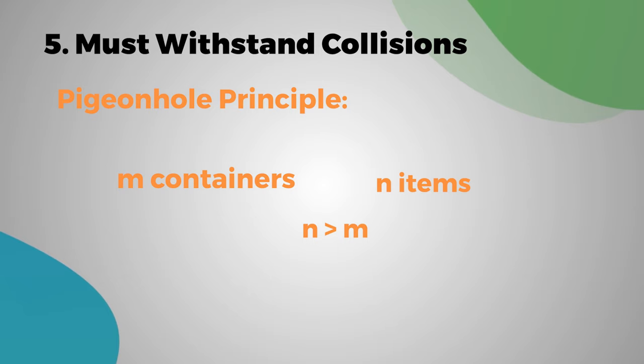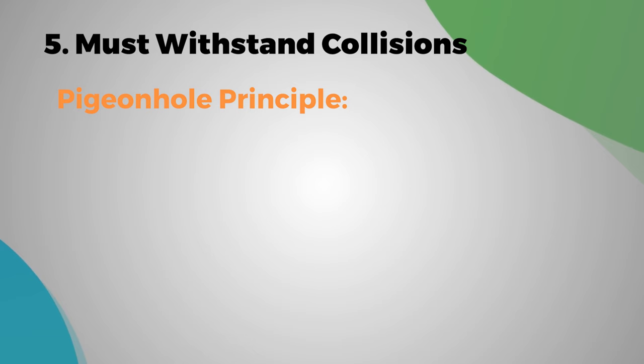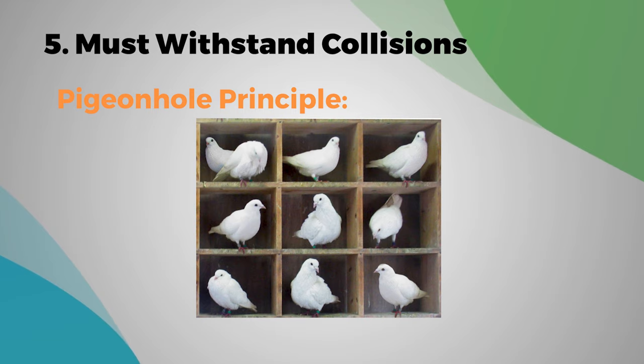It states that if n items are put into m containers with n greater than m, then at least one container must contain more than one item. It means if you have, for instance in this case, 10 pigeons and only 9 holes, you're going to have to put two pigeons into one of those holes—there's no way around it, right?